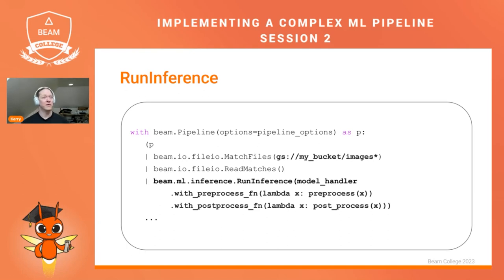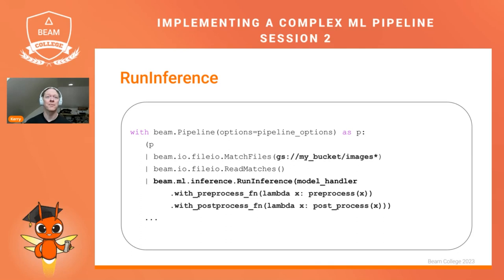As a brief review, RunInference is the transform we'll be using for all of our examples and in the pipeline we build later in this session. The RunInference transform takes as its main argument a ModelHandler that says how to load and how to do inference with a given model, usually for a given framework. That ModelHandler can have pre and post-processing functions attached, and there can also be error handling and other arguments.